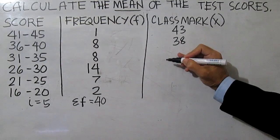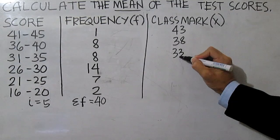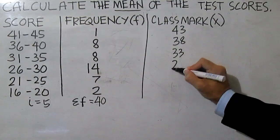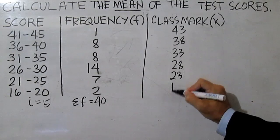26 plus 30 divided by 2 is 28, then 23, then 18.